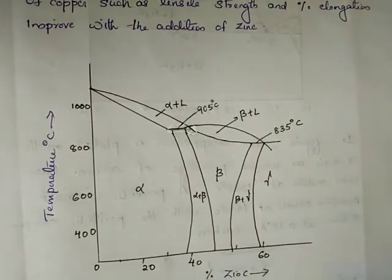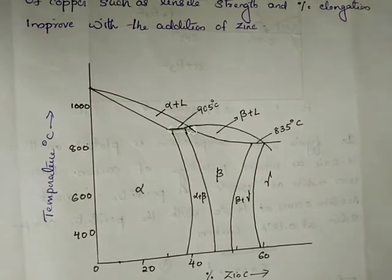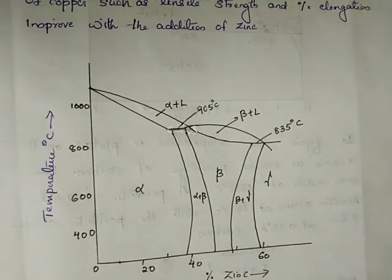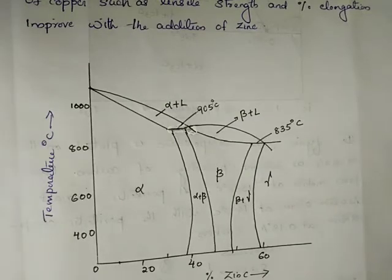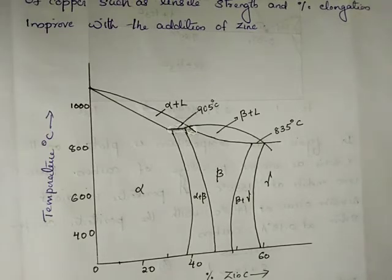This is the phase diagram of the copper-zinc system. In a phase diagram, different components have very different melting points. There are combinations of different phases. In the same combination, there are different phases with different melting points.